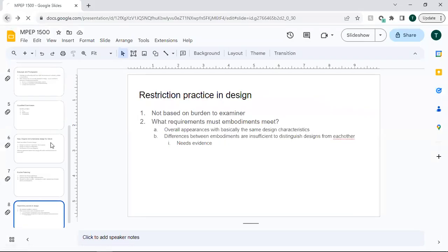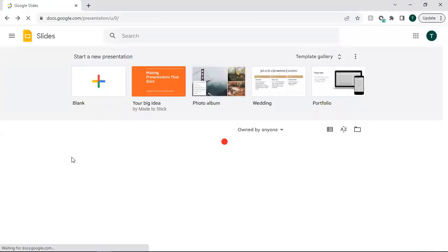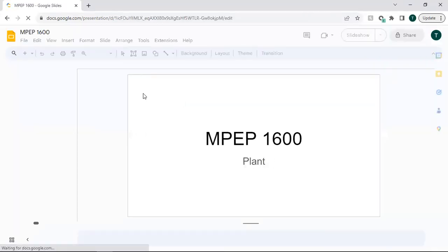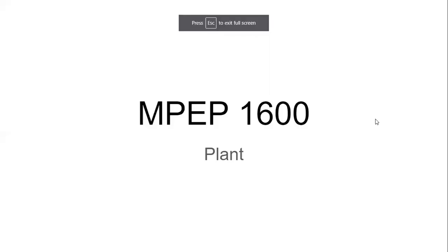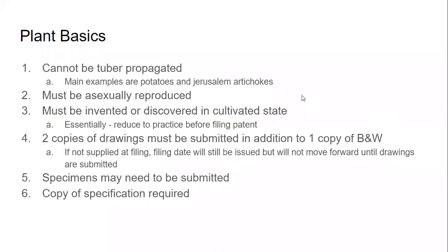Now combining with the plant chapter — MPEP 1600. For plant patents, they cannot be tuber propagated, so the main ones to remember are potatoes or Jerusalem artichokes — a patent cannot be obtained for those. The plant must be asexually reproduced, must be invented or discovered in a cultivated state, and you have to produce it to practice before filing. This is the only type of patent that works this way.